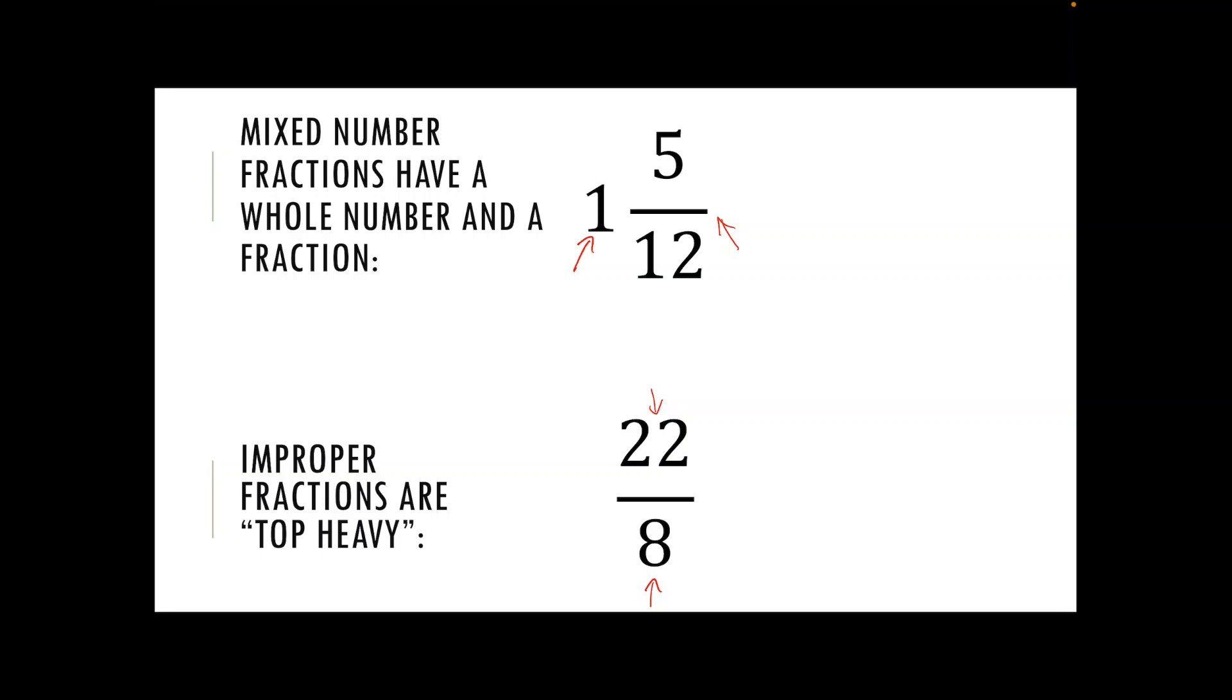If we have a look back up at our mixed number fraction there, to change that into an improper fraction we take our whole number and multiply it by our denominator. So in this case one times by 12 is 12 and then we are going to add on that five at the top to give us 17.